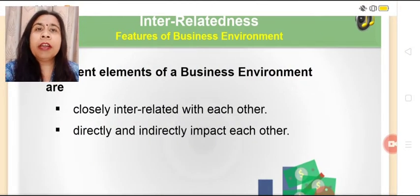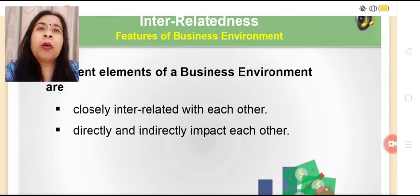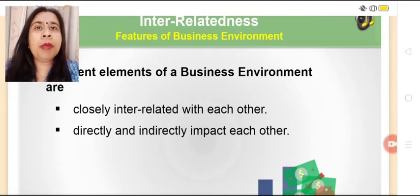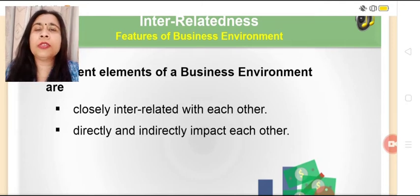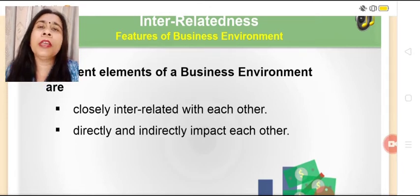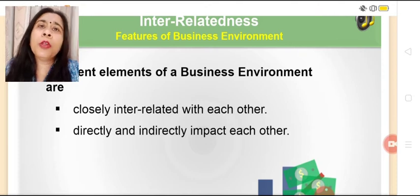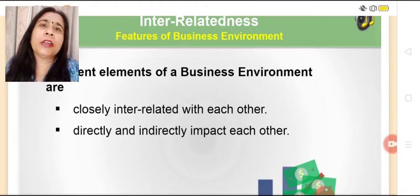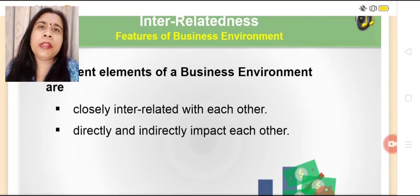The third feature is interrelatedness — elements of business environment are interrelated. Social environment is related to culture and trends prevailing in society. National income and per capita income of the country relate to economic environment. Political rules and acts passed form the political environment. Technology, which updates day by day, forms the technological environment. All these different types of elements are closely interrelated with each other.